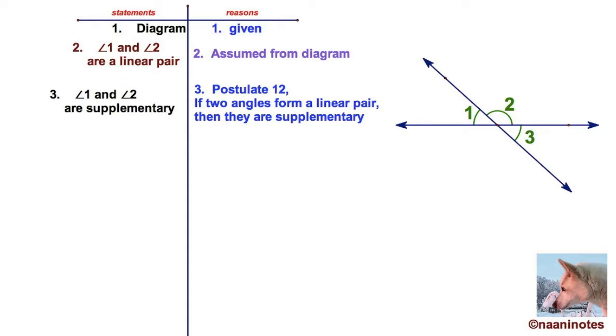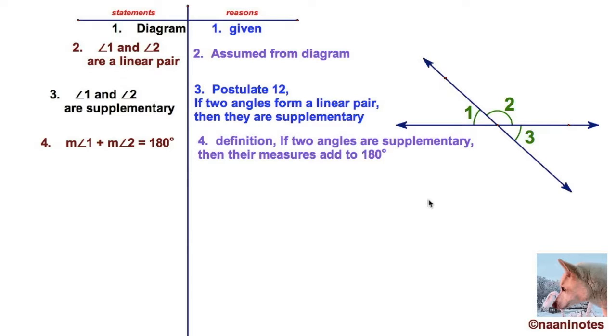Two angles that are supplementary add up to 180 degrees. How do we know that? That is a definition you remember. And we're writing it in our conditional statement form. If two angles are supplementary, then their measures add to 180 degrees. Pretty good so far.